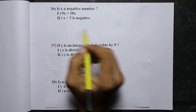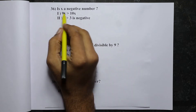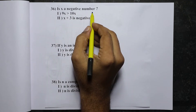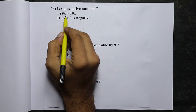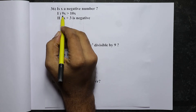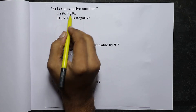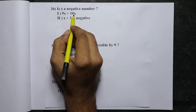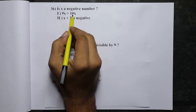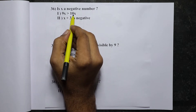Let us start with data sufficiency. Is x a negative number? The first statement says that 9x is greater than 10x. If that is the case, then x has to be a negative number. So the first statement alone is sufficient.